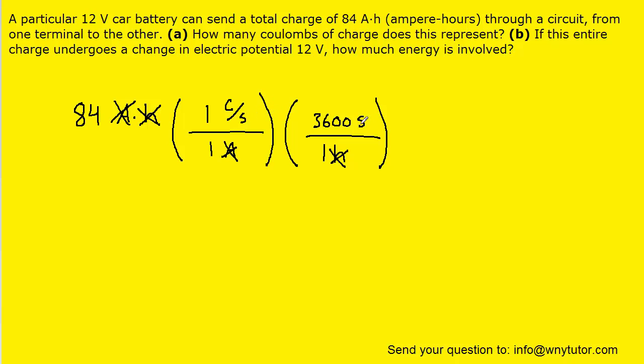And if we look carefully, we have seconds here in the numerator, and then technically these seconds are in the denominator since we're dividing by seconds. And so we're left with coulombs.